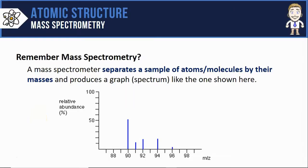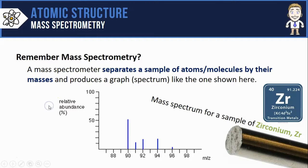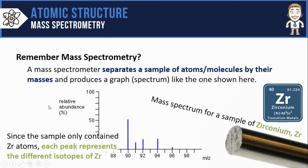Remember that a mass spectrometer separates a sample of atoms or molecules by their masses, and then it produces a graph or a spectrum like the one shown here for zirconium. Since the only thing that I put through the spectrometer was zirconium atoms, then each peak here represents the different isotopes of zirconium.